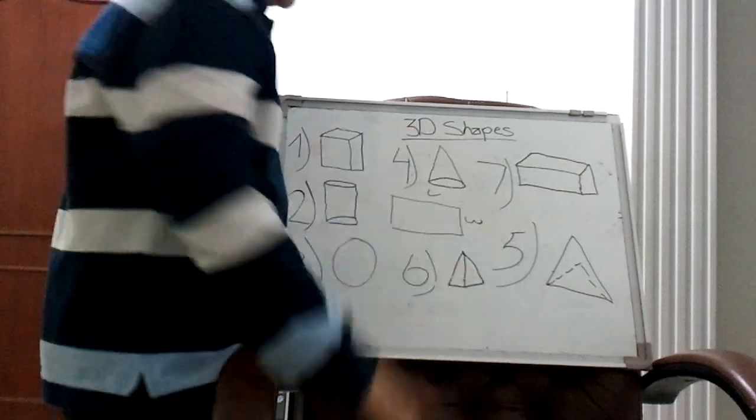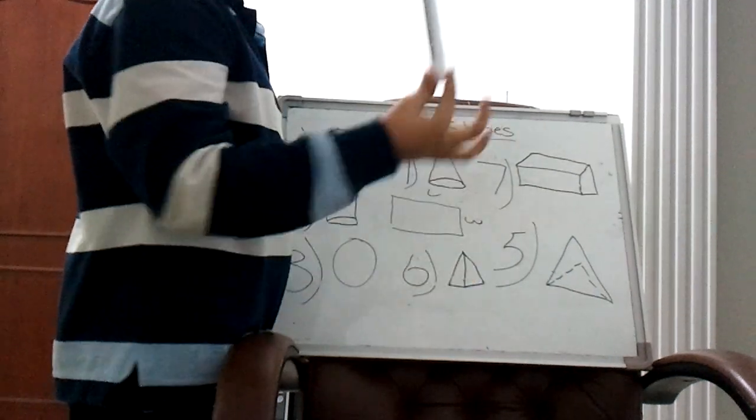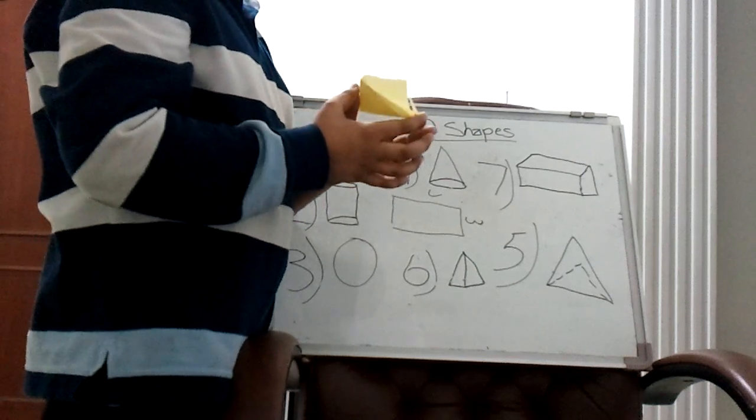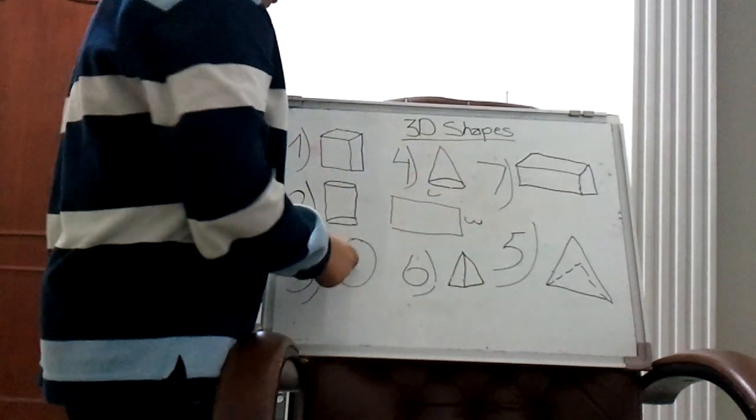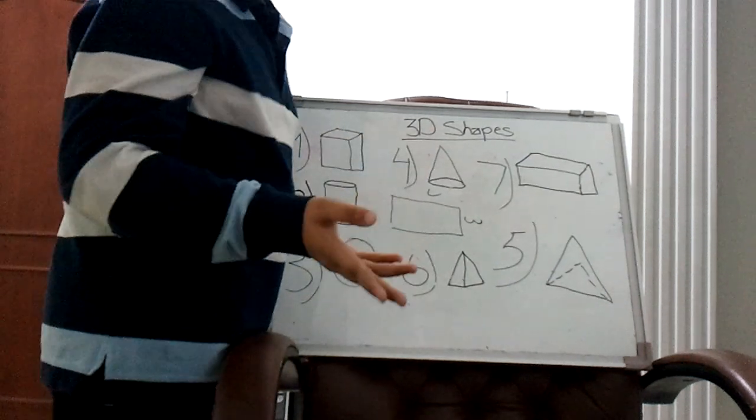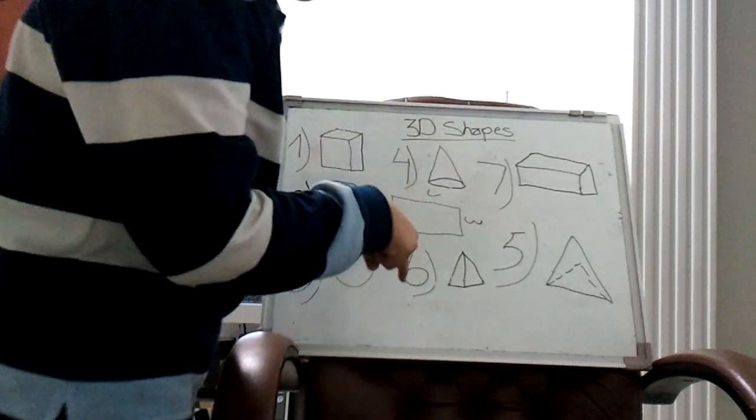A cylinder, sorry. And I tried to make a square-based pyramid but it was a fail. So here is sphere. Thank you for watching this, and again, if you want to see all the faces, edges, and vertices, you can see the description down below.